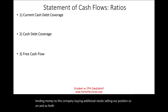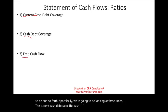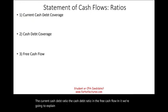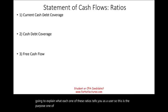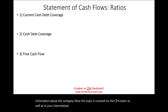Specifically, we're going to look at three ratios: the current cash-debt ratio, the cash-debt ratio, and the free cash flow. We'll explain what each one of these ratios tells you as a user. This topic is covered on the CPA exam as well as in your intermediate accounting course, so it's very important that you understand it.